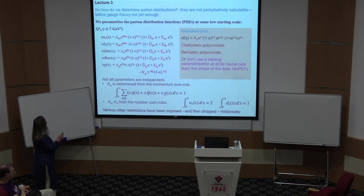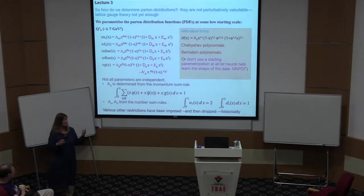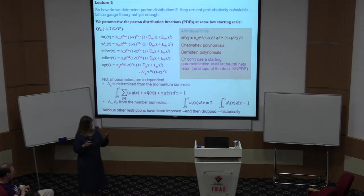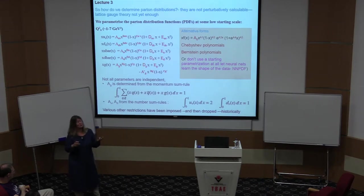So let's say take a typical parameterization for the valence U, valence D, U bar, D bar, gluon. And you have an overriding X to the B times 1 minus X to the C kind of shape to bind it at either ends. And then you just put some polynomials in after that. These polynomials are typical. They were the original choice of what was once called the MRST collaboration.